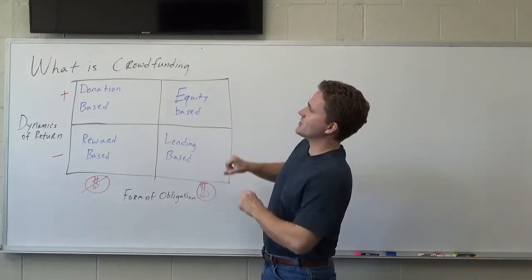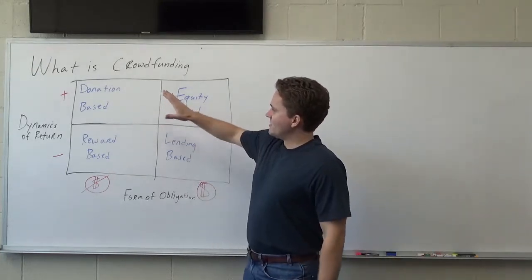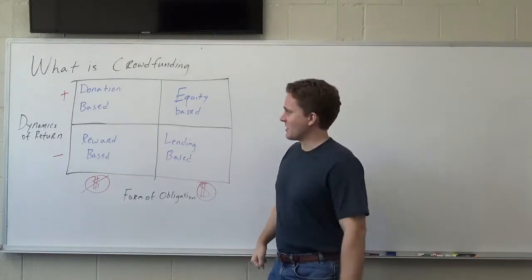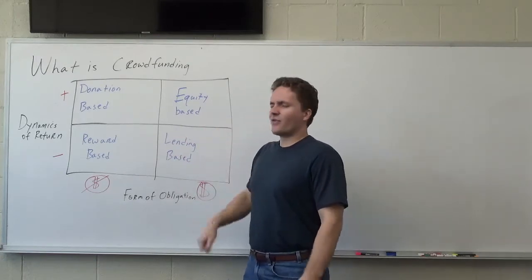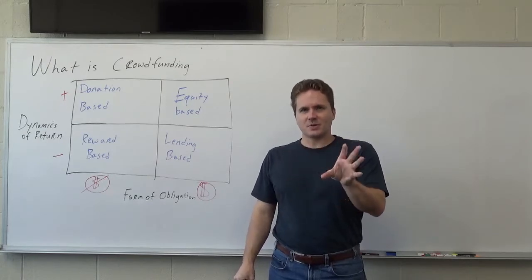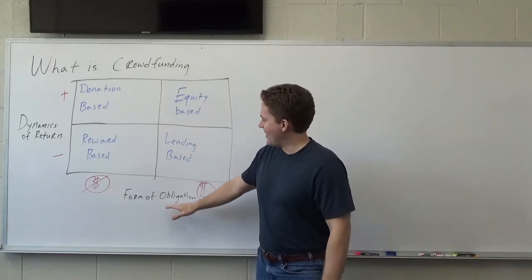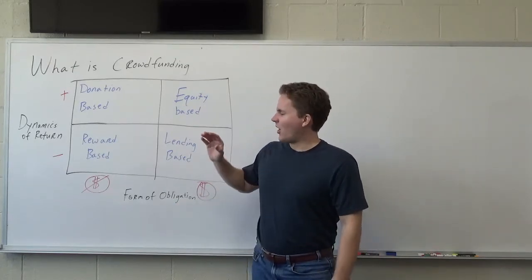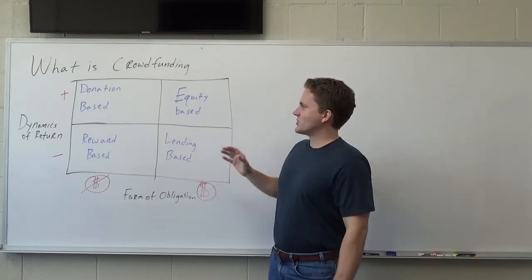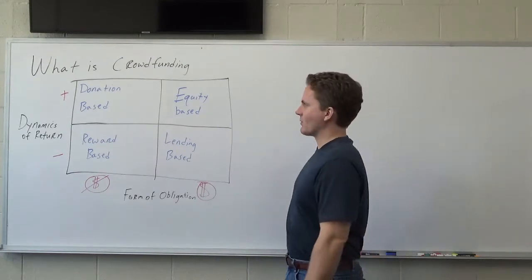And so there's kind of four major types of crowdfunding. You've got your donation base, reward base, lending base, and equity base. And of course everything in academia has to be in a two by two matrix. So dynamics of return. Do you remember I talked about those dilutable versus non-dilutable investments when we're talking about accelerators? That's what we're looking at with dynamics of return. How dilutable is the investment? And then the form of obligation. Are you paying it back with financial or non-financial means? So let me just kind of walk you through this and I think it'll make a little more sense.